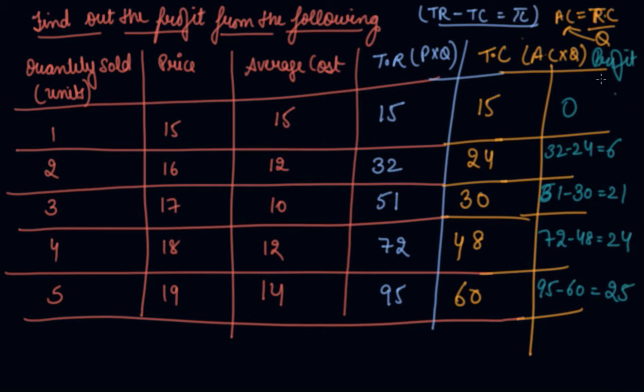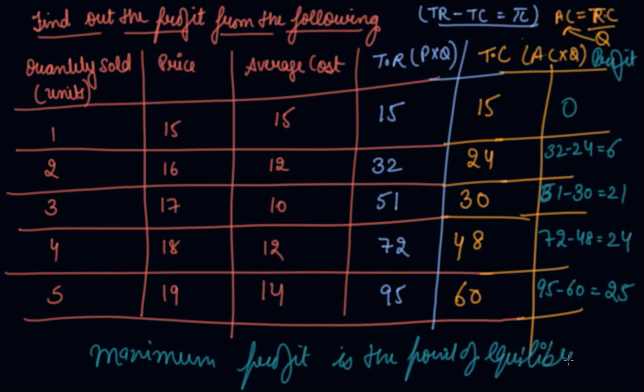So this is the profit we have got. And suppose if there is a question where they ask you where the producer is at its equilibrium - maximum profit is the point of equilibrium. So here the maximum profit is 25, so the equilibrium point will be at quantity 5.